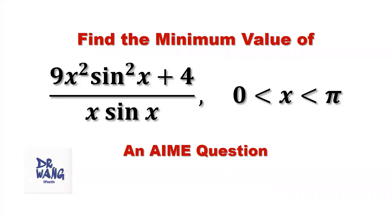Hello, everyone. I'm Dr. Wen. Here is the question. Find the minimum value of 9x squared times sine x squared plus 4, divided by x times sine x, where x is between 0 and pi.